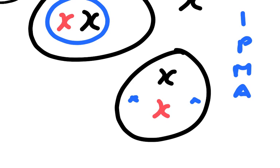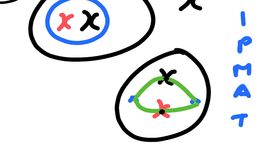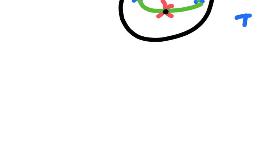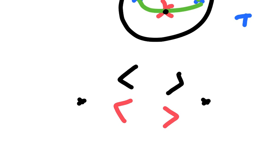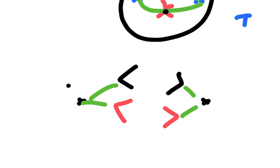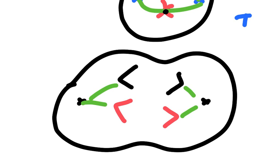You have interphase, then prophase, then metaphase when they line up in the middle, then anaphase where they get pulled apart, and then telophase where you get two nuclear membranes. Spindle fibers form and the centromeres attach to the spindle fibers, which then pull the chromosomes apart to opposite poles of the cell.